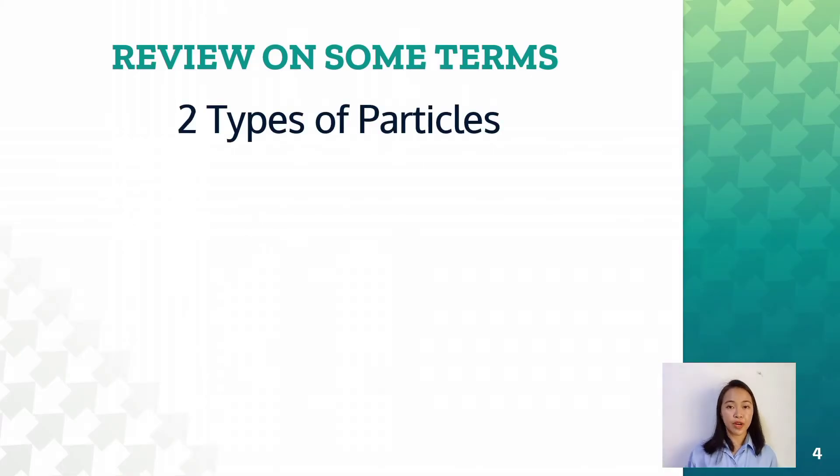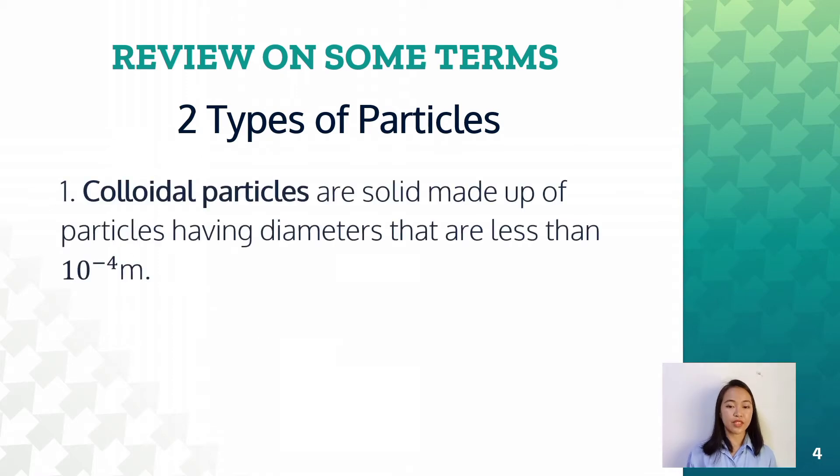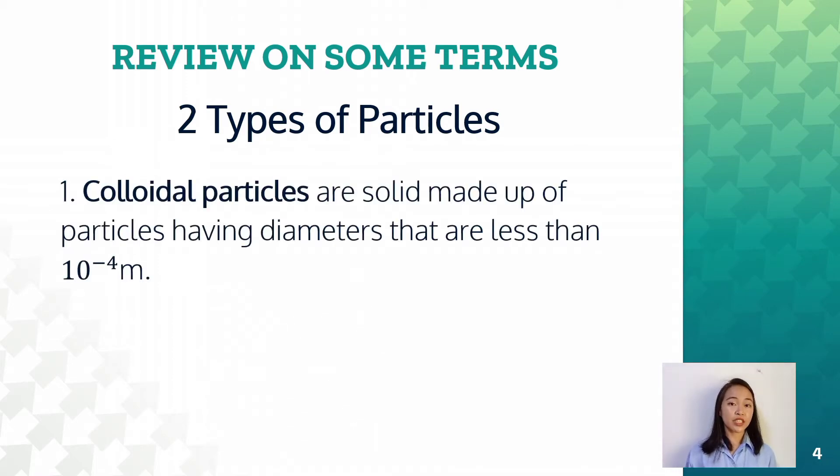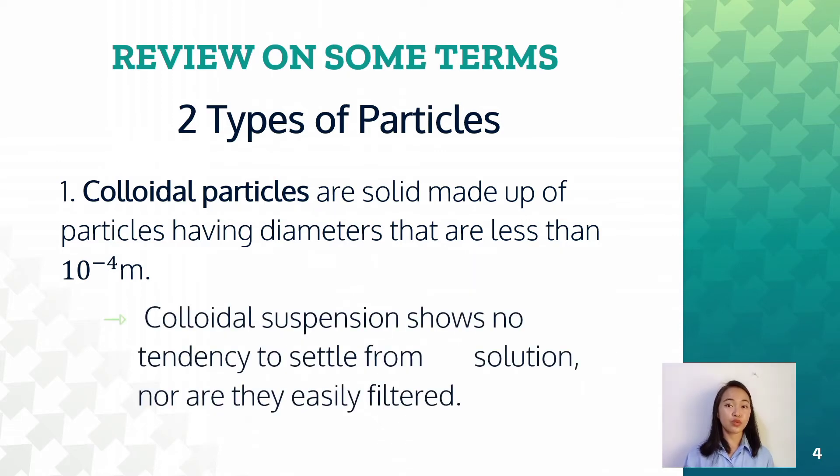There are two types of particles. The first type is colloidal particles. These are solid made up of particles having diameters that are less than 10 to the power of negative 4 meters. Colloidal suspension shows no tendency to settle from solution, nor are they easily filtered.